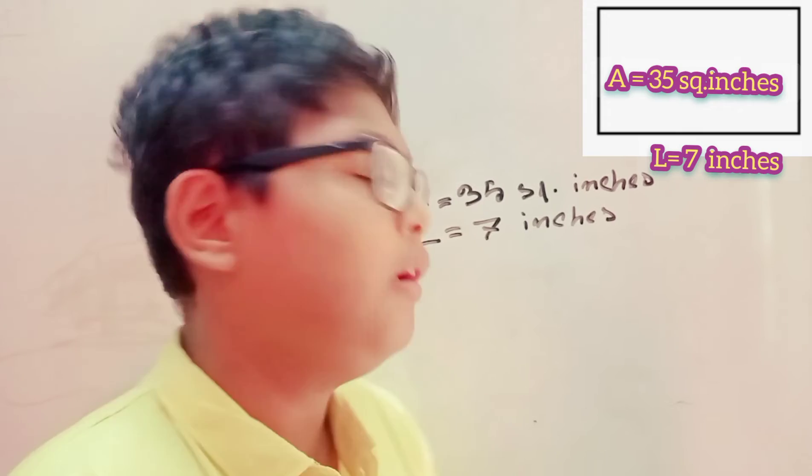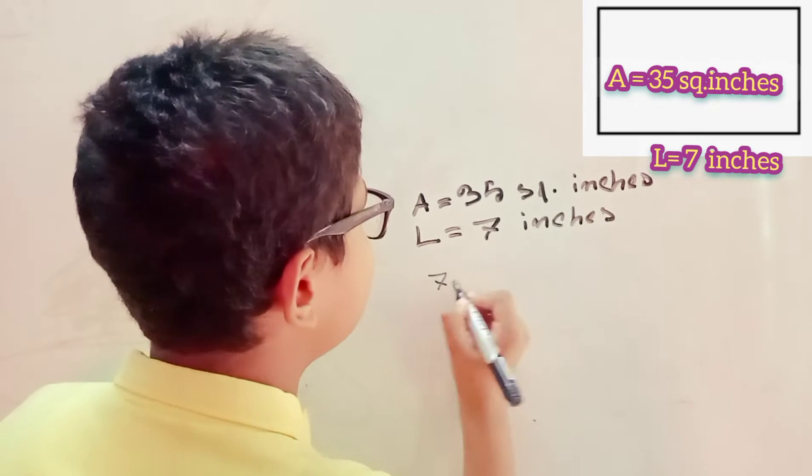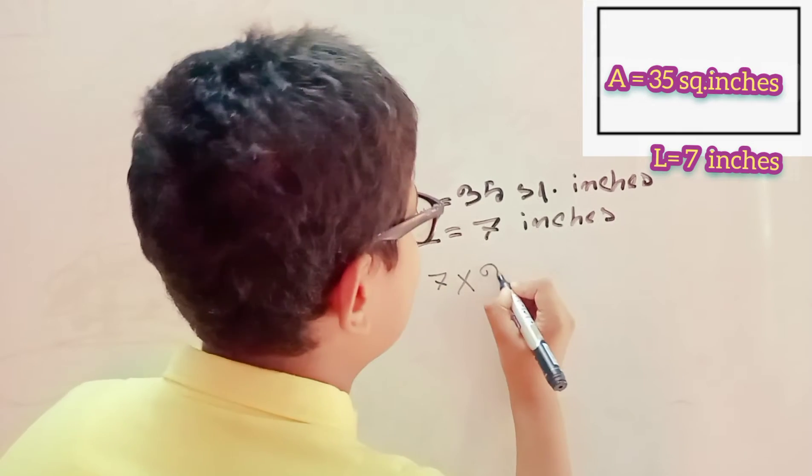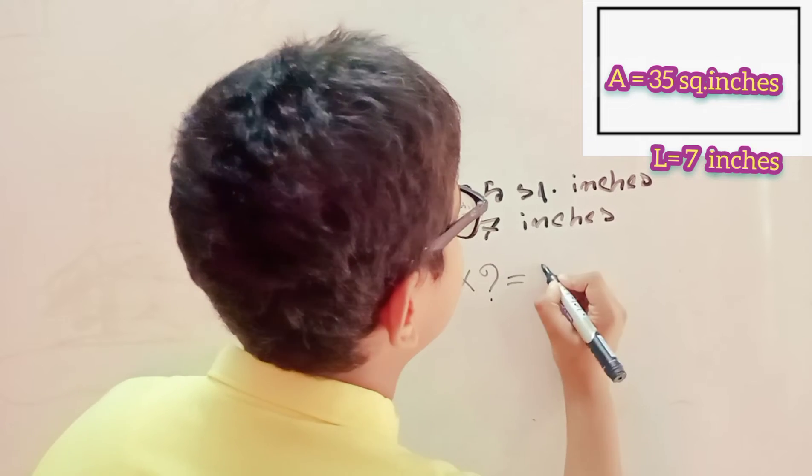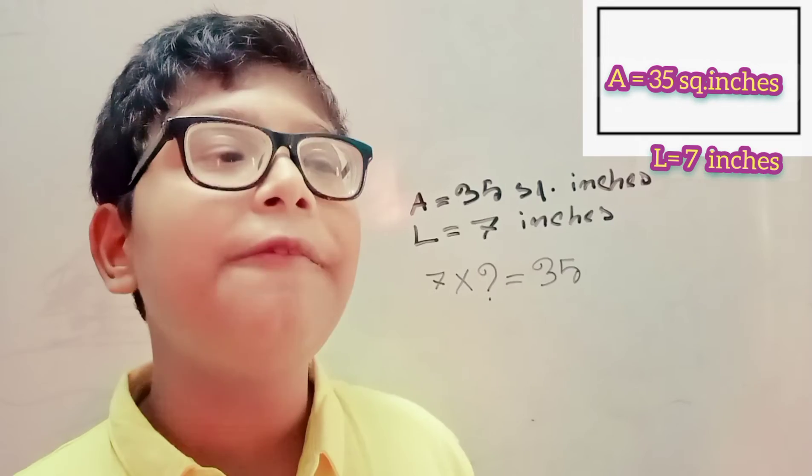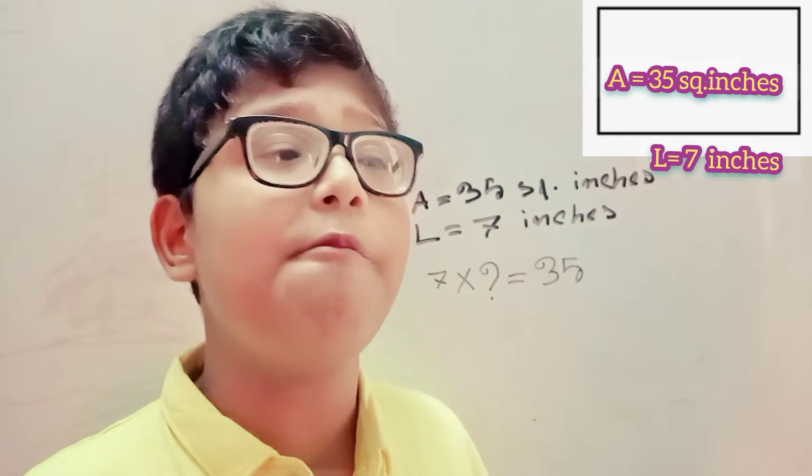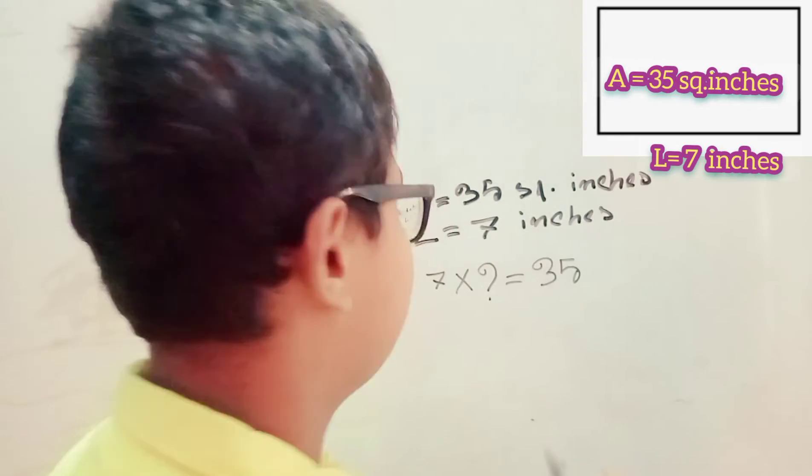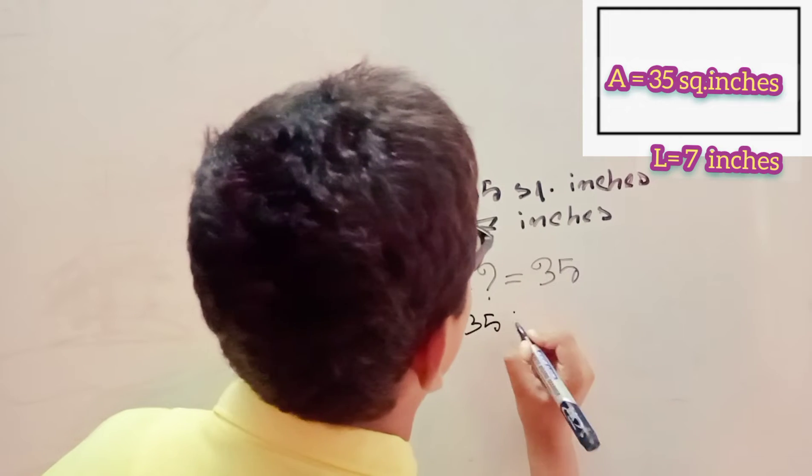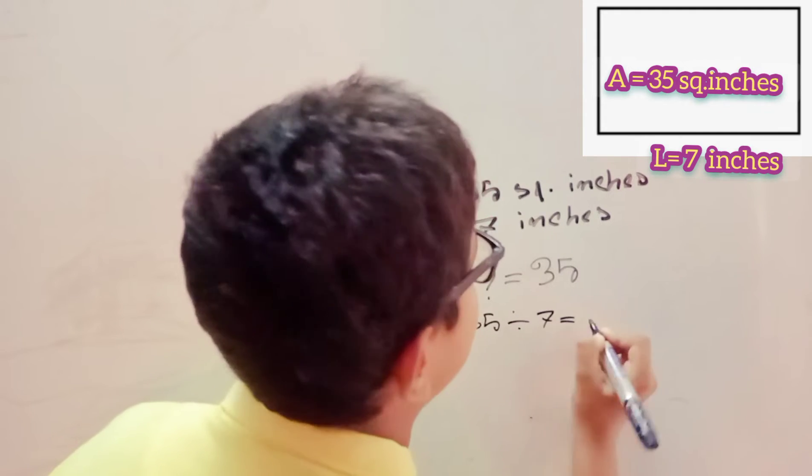7 into what equals 35? We can find out the missing side width by dividing 35 by 7, which equals 5.